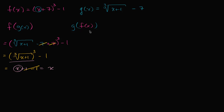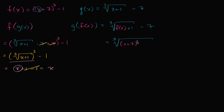Now let's try what g of f of x is. g of f of x is going to be equal to — wherever I see an x, I replace it with f of x. So that gives me the cube root of f of x plus one minus seven. Well, that's the cube root of x plus seven to the third power minus one — which is f of x — and then we add one, and then we subtract seven.